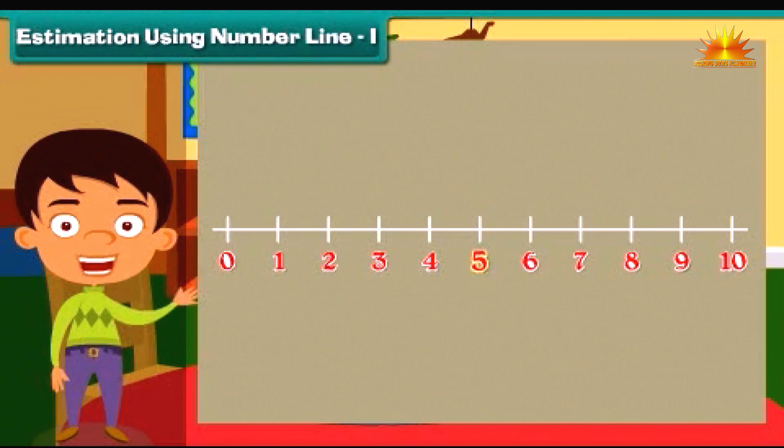Can you guess the position of number five on this line? Yes, it will be in the middle of the line. The position of number three will be between zero and five, and number seven will be between five and ten.